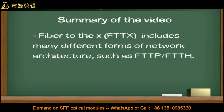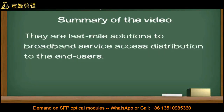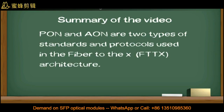Fiber-to-the-X includes many different forms of network architecture, such as FTTP and FTTH. They are last-mile solutions to broadband service access distribution to end-users. PON and AON are two types of standards and protocols used in fiber-to-the-X architecture.